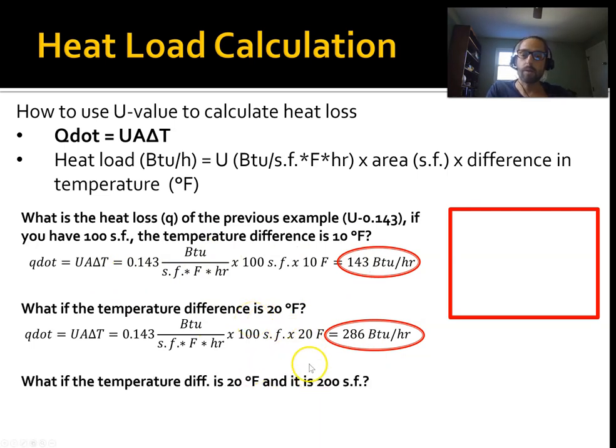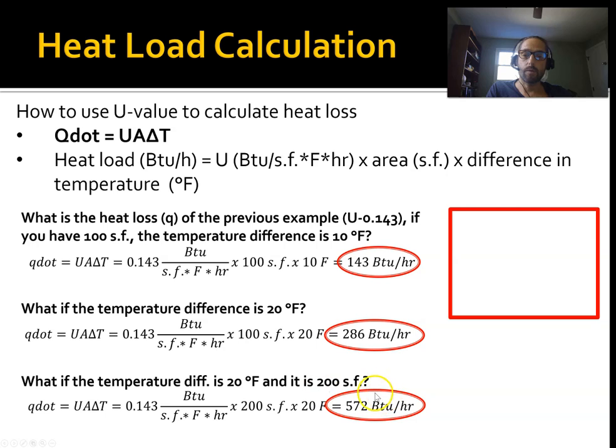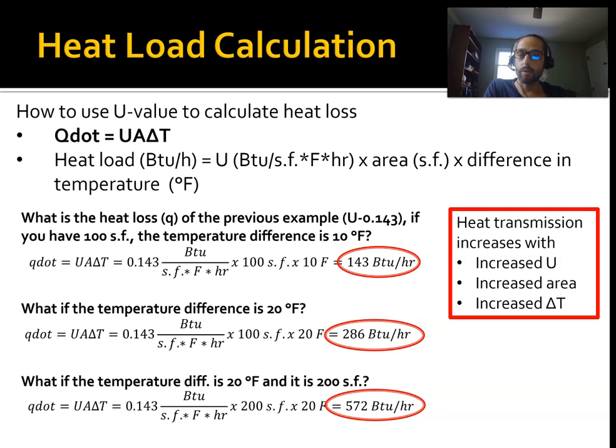What if the temperature difference is 20 degrees, and the surface is 200 square feet instead of 100 square feet? So we double the surface area, and here we have double the temperature. We do the same formula, and we end up with, we double it again. As you can see, the heat transmission increases with increased U. So increased U means more heat transmission, means worse insulation. We decrease the R, that increases the U. We increase the area, and we increase the delta T. And this should be pretty intuitive. If we decrease the R value, of course we're going to lose more heat. Bigger surface area, of course you're going to lose more heat. And the temperature difference, the higher the delta, the more that heat's going to want to move across the surface.